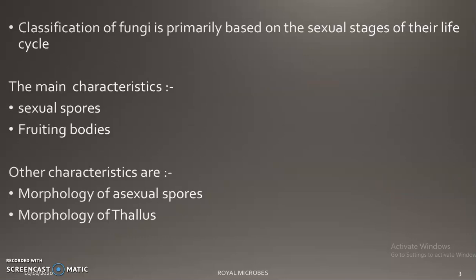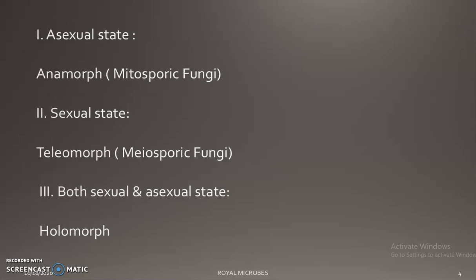Classification of fungus is primarily based on the sexual stage of their life cycle — that is, mainly sexual spores and the fruiting bodies of the fungus. Other characters include morphology of asexual spores, morphology of thallus (the body of the fungus), and also the presence of locomotory organelles such as flagella.